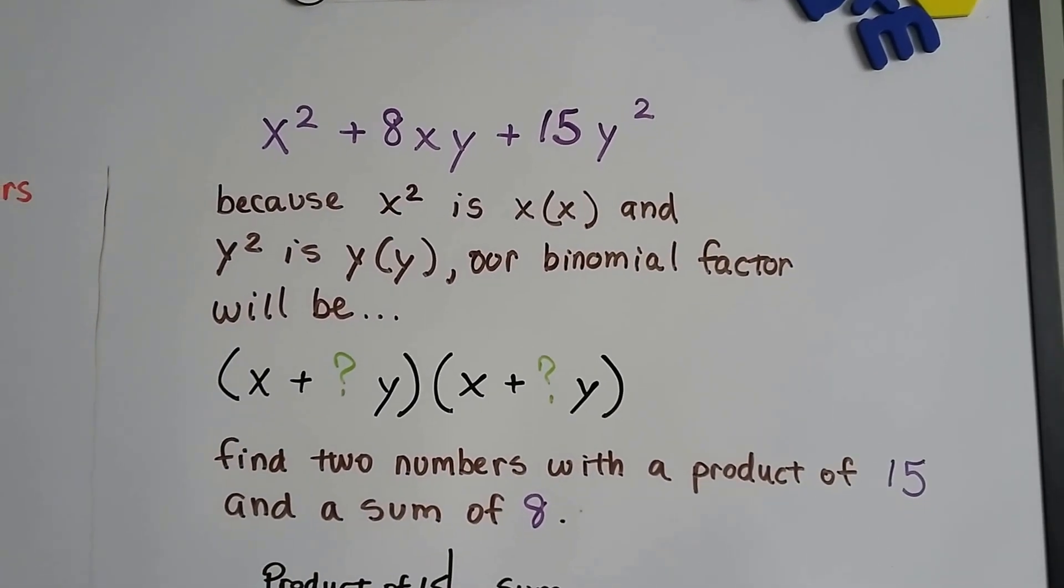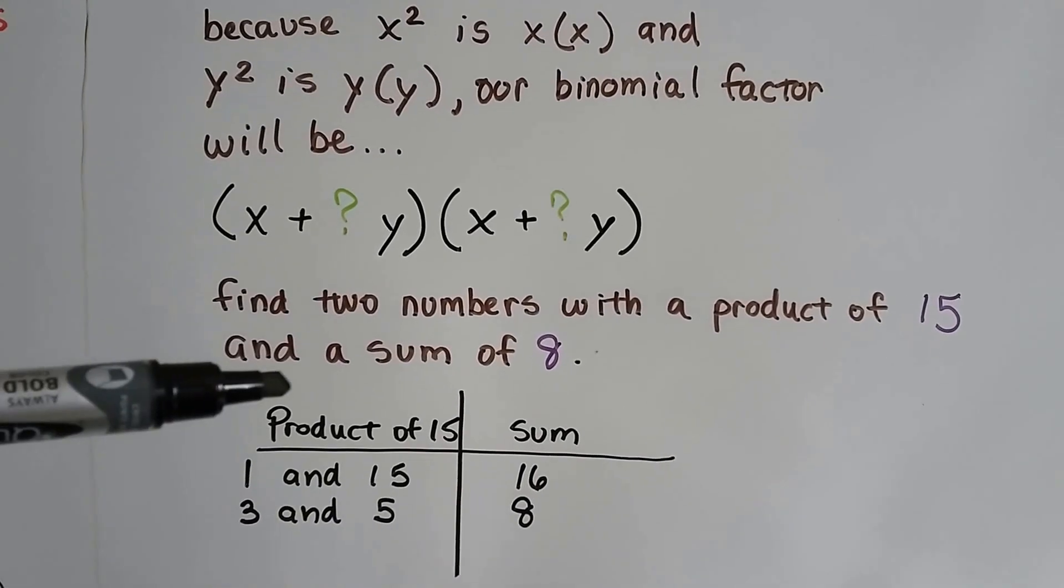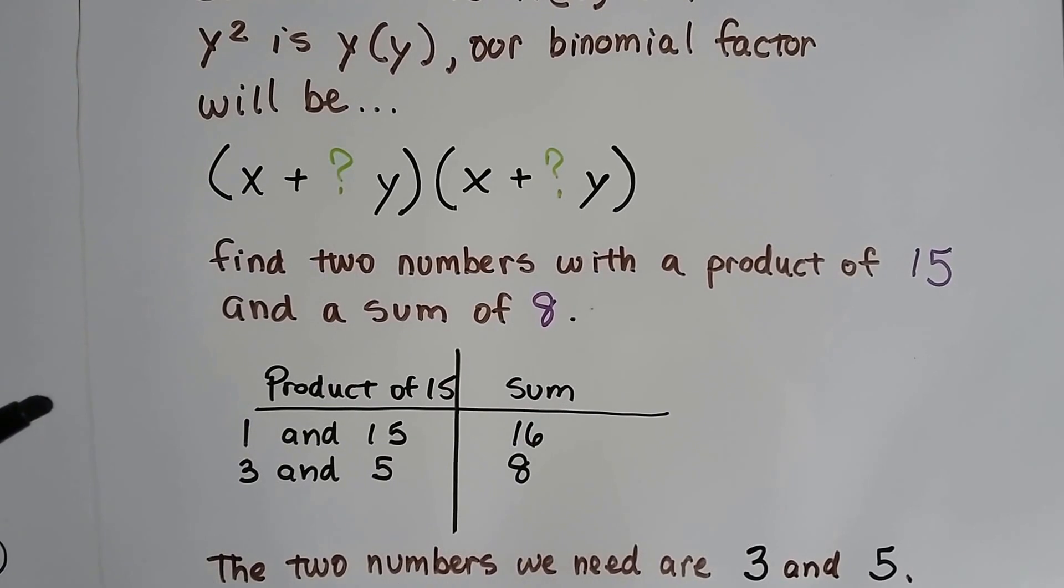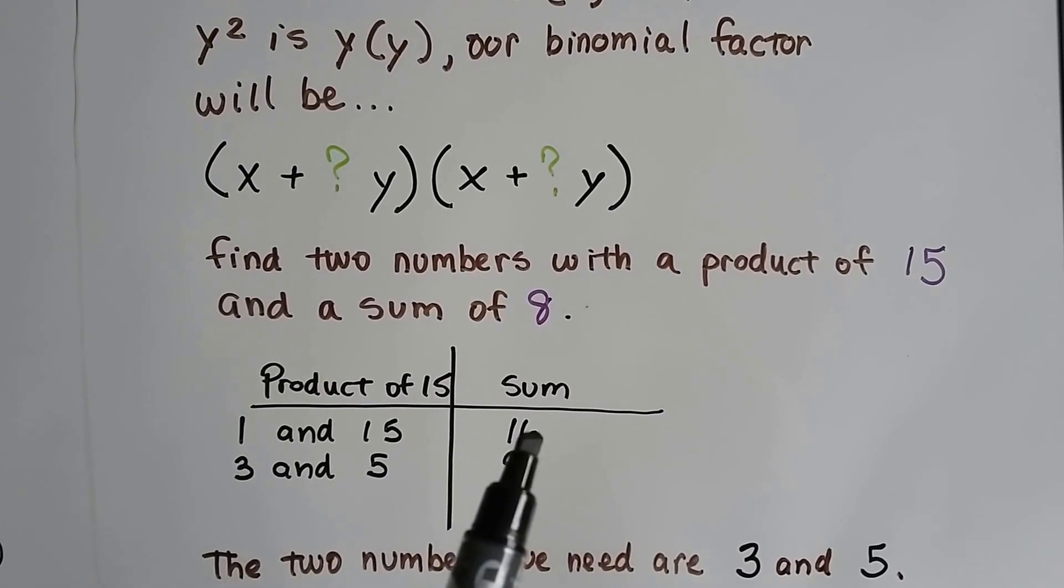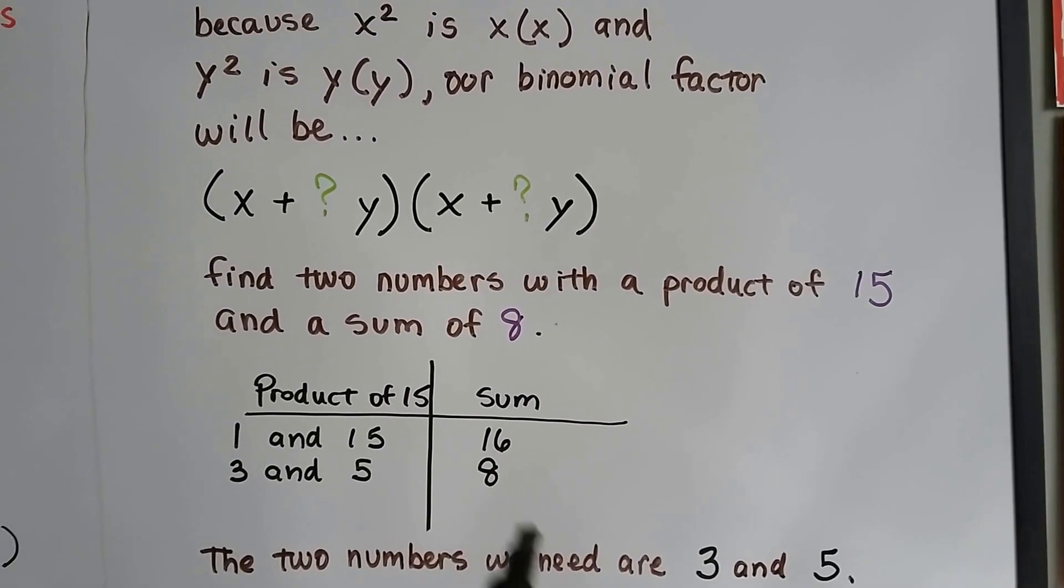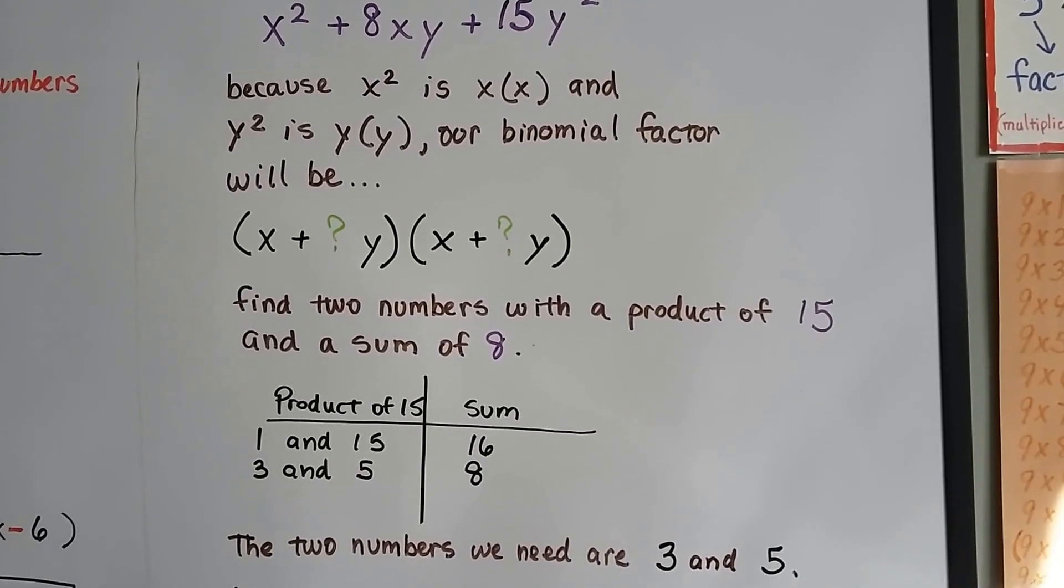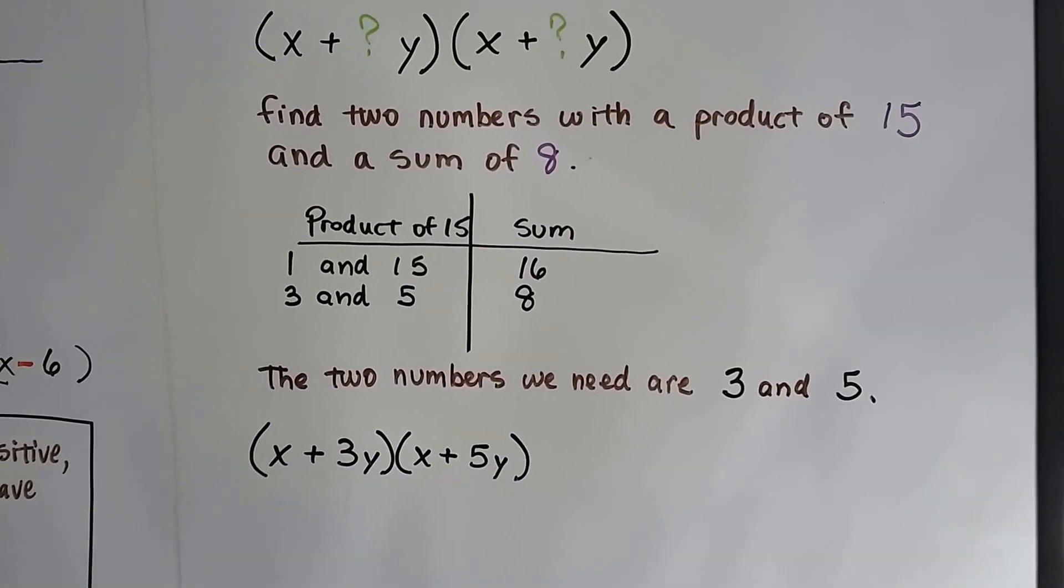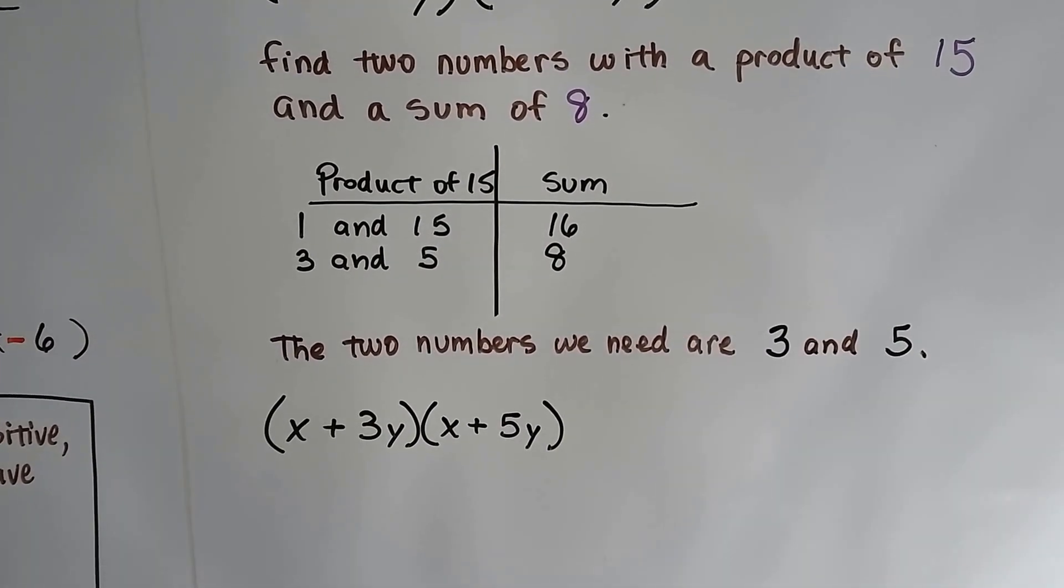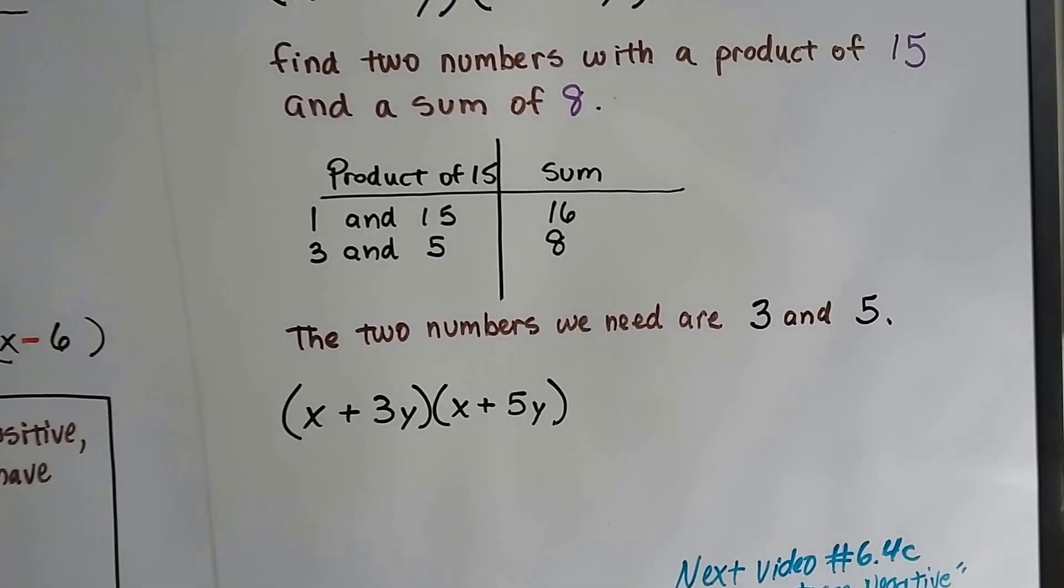Now all we need to do is find two numbers with a product of 15 and a sum of 8. So we do our little table and we list products of 15. 1 times 15 is 15. And 3 times 5 is 15. But 1 plus 15 is a 16. And 3 plus 5 is 8. So it looks like we've got 3 and 5 as the numbers. We multiply 3 and 5 and get 15. We add them and we get 8. Perfect. So now we've got our x plus something y and x plus something y. And we put in the 3 and the 5. We've got our binomial factors. Isn't that quick? So easy.